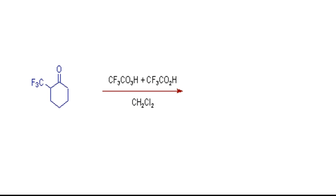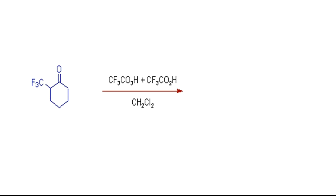In this case, the carbonyl group is flanked by a CH2 group on one side and a CHCF3 group on the other side. The presence of the electron-withdrawing CF3 group decreases the migratory aptitude of the methylene. Thus, under Baeyer-Villiger conditions, the CH2 group migrates in preference to the CHCF3 group to form this lactone.